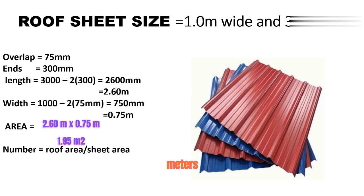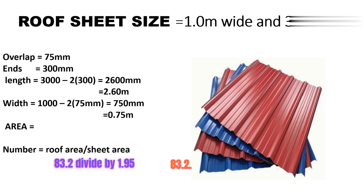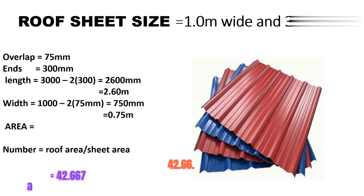So the effective area per sheet will be 2.60 by 0.75, which gives us 1.95 square meters. The number of sheets will be the roof area divided by the sheet area — our roof area was 83.2, divided by 1.95, which gives us 42.66. So approximately we need 43 iron sheets. Thank you guys for your time, until next time, bye bye.